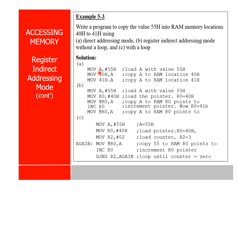If you want to copy to 25 locations, using register indirect addressing is much easier compared to direct addressing. With direct addressing you have to write MOV A, #55H, then MOV 40H, A; MOV 41H, A; MOV 42H, A and so on — 25 instructions for each location, which is very time consuming. With register indirect addressing, you can ask the microprocessor to repeat just two instructions: MOV @R0, A and INC R0.